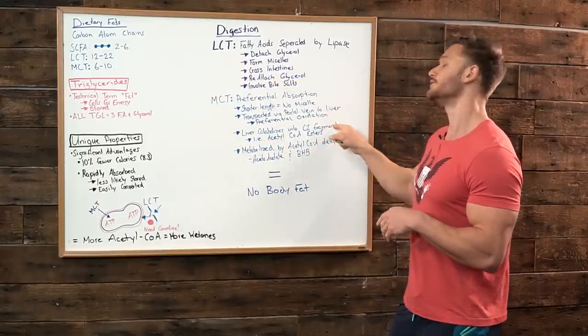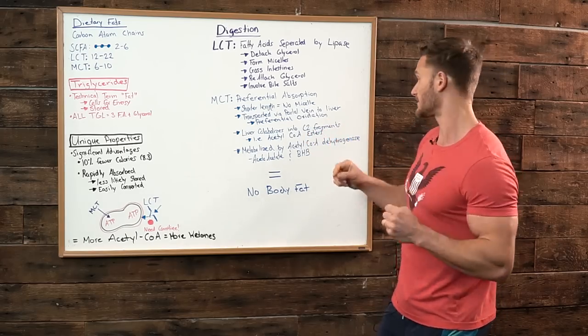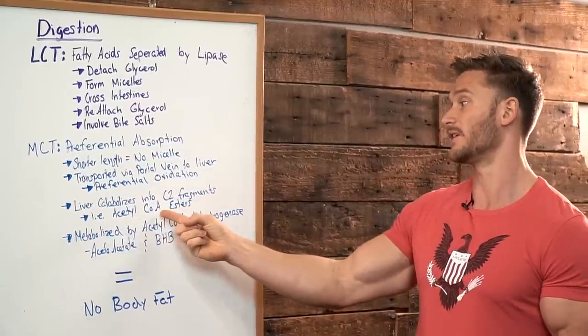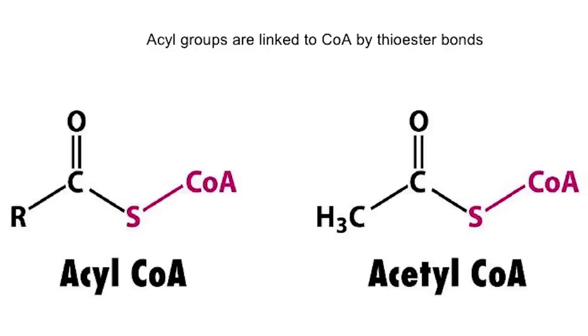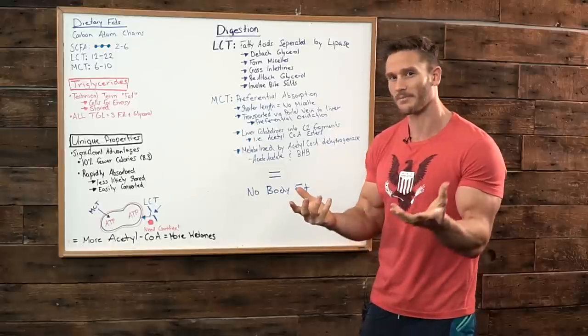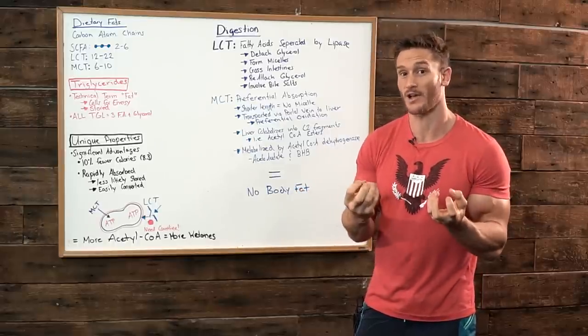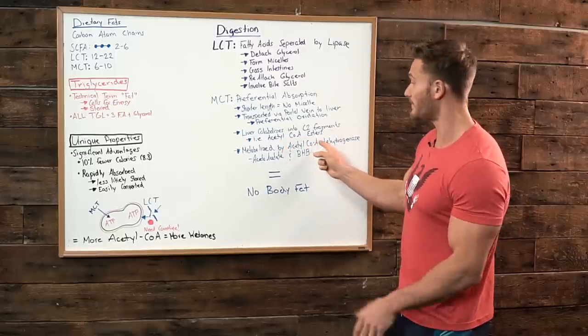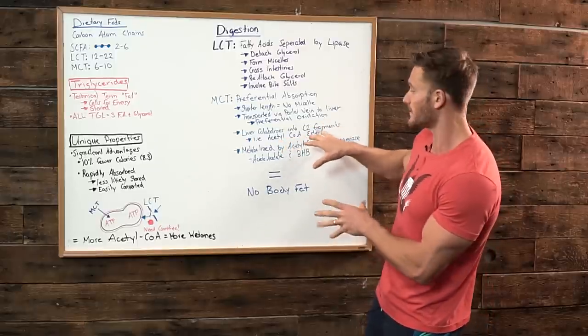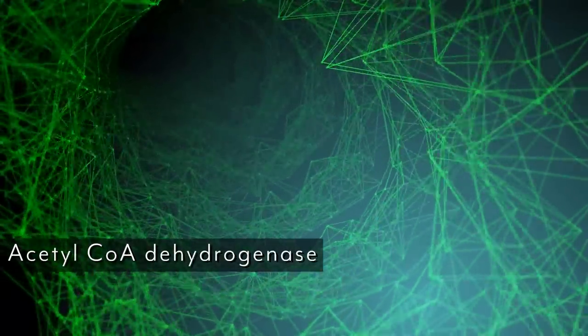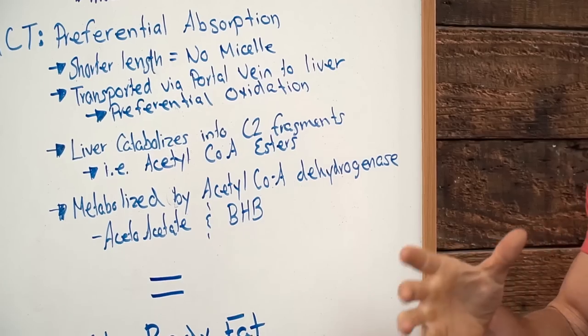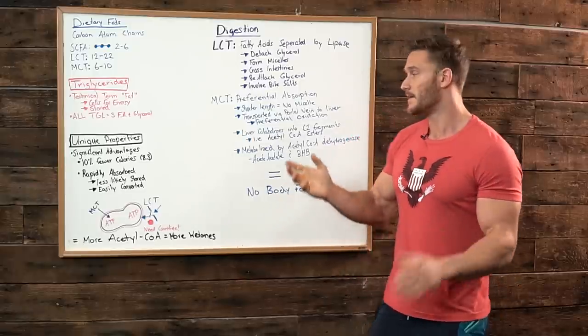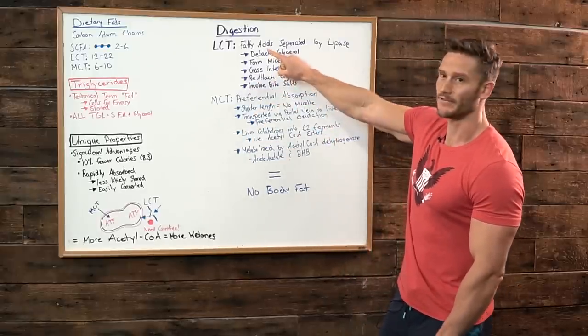So the liver breaks it down into C2 fragments. C2 meaning two chains, just two atoms, two carbon atoms. So it's a really small chain. And what it does is it turns them into acetyl coenzyme A esters. A C2 fragment would be an acetyl coenzyme A ester. Now I know I'm getting a little bit complex but acetyl coenzyme A esters are basically the building blocks for energy in the mitochondria. Once we have the acetyl coenzyme A esters that are formed from the fat, which again has been completely streamlined, then it gets metabolized by acetyl coenzyme A dehydrogenase. That's what breaks down the acetyl coenzyme A into acetyl acetate and beta-hydroxybutyrate. What the heck is Thomas talking about? All of this means we don't have the middleman.